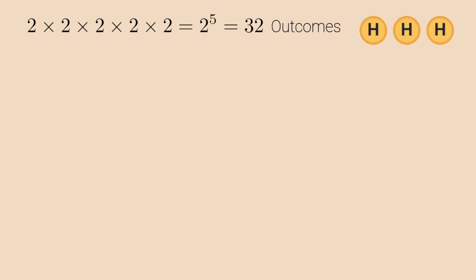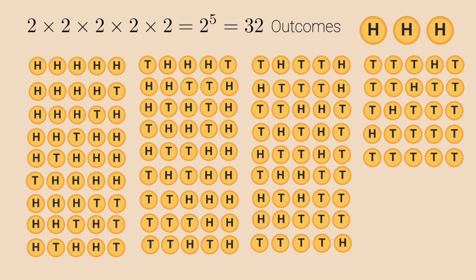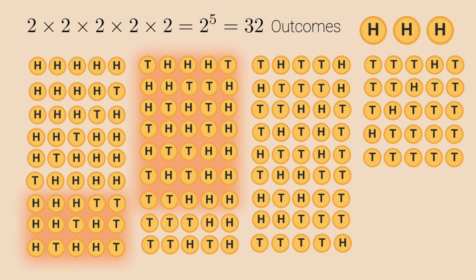Now how many of them contain exactly three heads? Let us see by listing all the 32 outcomes. You can have 5 heads in a row, or 4 heads and 1 tail, or 3 heads, then 1 tail, then followed by 1 head. Basically, you get the idea to write the other outcomes. We are only interested in outcomes which have exactly 3 heads, and we can see from here that there are 10 possible ways to get it. Thus, the probability simply is 10 by 32 or 5 by 16.